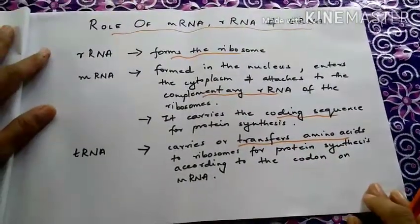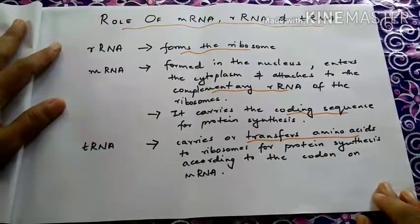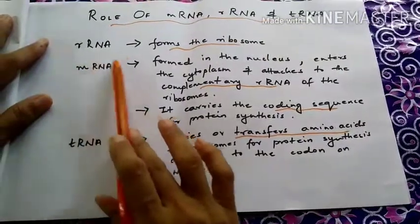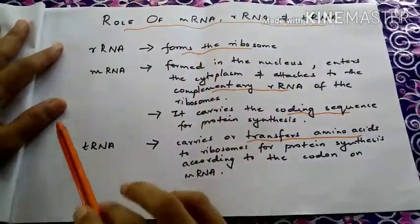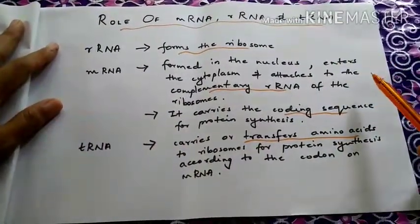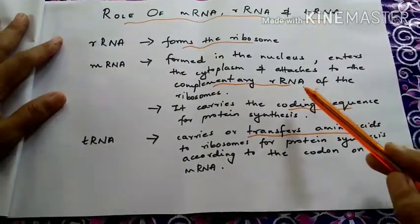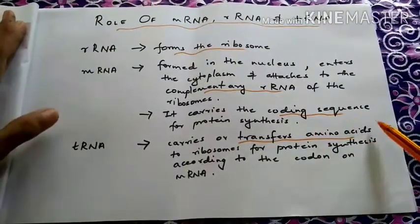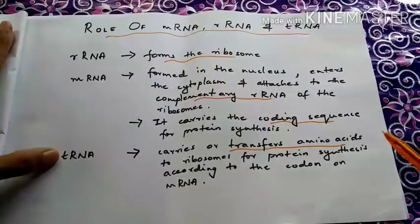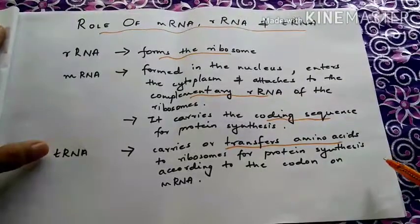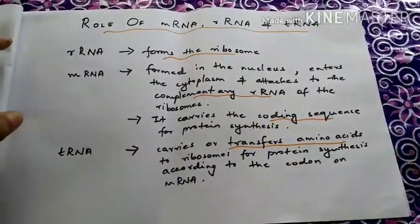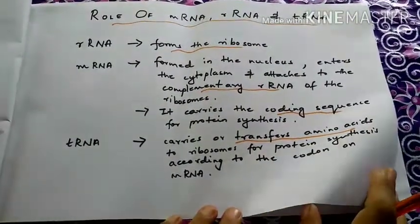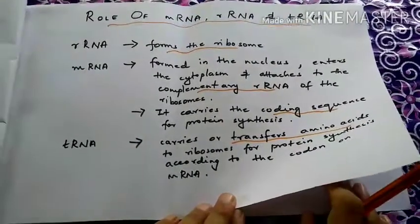Let's now see the role of messenger RNA (mRNA), ribosomal RNA (rRNA), and transfer RNA (tRNA) in protein synthesis. Ribosomal RNA forms the structure of the ribosome. The messenger RNA, which is formed in the nucleus, enters the cytoplasm and later attaches to the complementary ribosomal RNA of the ribosomes, carrying the coding sequence for protein synthesis. The transfer RNA carries or transfers amino acids to the ribosomes for protein synthesis, depending upon the codons on the messenger RNA. Hence, with the help of these different kinds of RNA in the ribosomes, proteins are synthesized — that is the main function attributed to ribosomes.